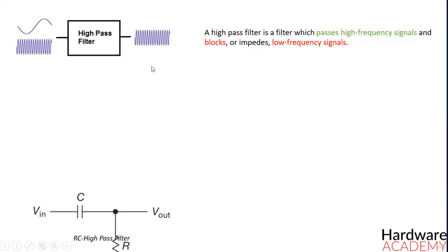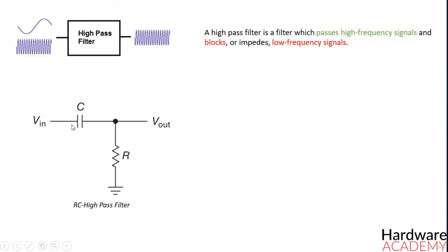High-pass filters can be constructed using resistors with either capacitors or inductors. A high-pass filter composed of a resistor and a capacitor is called a high-pass RC filter, and a high-pass filter with a resistor and an inductor is called a high-pass RL filter.